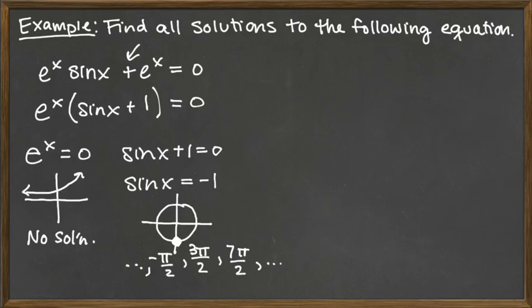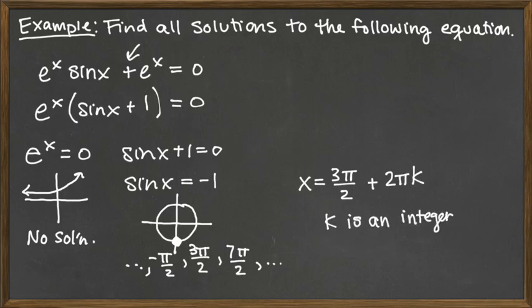So to capture all of these, we would have x is equal to – we could just pick any one of them. We could go with the first one that we wrote out, the 3 pi over 2, the one that lands between 0 and 2 pi. But then what we would have to account for is multiples of 2 pi. And so we write that as 2 pi times k, where k is an integer. Integer covers all positive and negative whole numbers as well as 0. And that would be our solution to this equation.